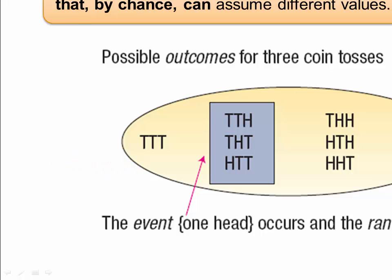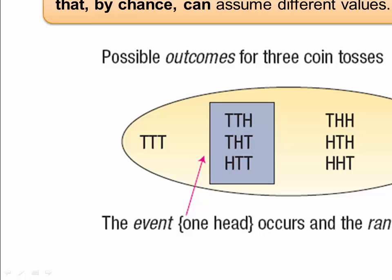When we list all possible outcomes of an experiment and the probability associated with each outcome, we have a probability distribution. You can find more about that on page 189 of your Lind text.